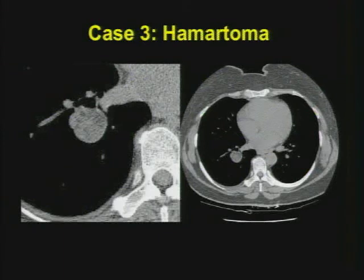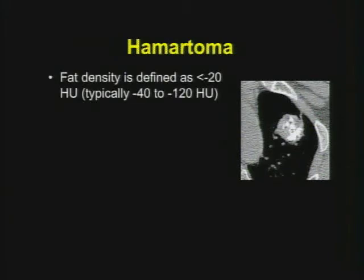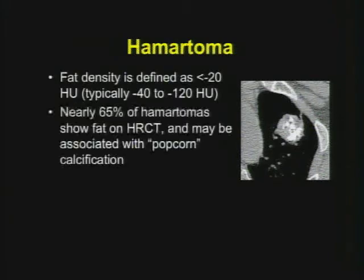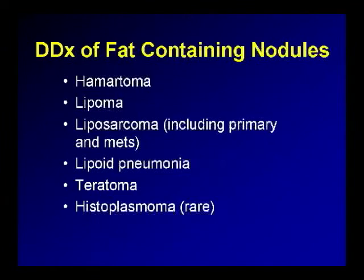Case number three: the coned-in image. Internal fat is the main thing to look for. This is a pulmonary parenchymal hamartoma — a benign lesion. Coarse popcorn calcification within a mass should make you think of either a granuloma or a hamartoma. Fat density is typically defined as less than negative 20 Hounsfield units on CT. Many hamartomas will show coarse calcification or fat, but not necessarily both. Occasionally you'll biopsy a suspicious nodule without these features and it will be a hamartoma — that's okay. You should have a differential for fat-containing masses in the chest.